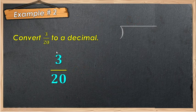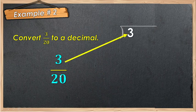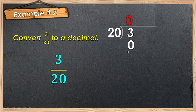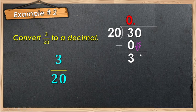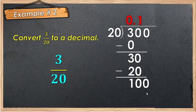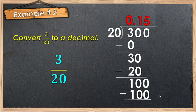Number 2: 3 over 20. Convert to decimal. 3 is inside the long division bar, 20 is outside. Proceed to division. 3 divided by 20, the answer is 0. Then 0 times 20 is 0. 3 minus 0 is 3. Then add 0 and place the decimal point. Bring down 0: 30 divided by 20, the answer is 1. 1 times 20 is 20. 30 minus 20 is 10. Add 0 and bring it down: 100 divided by 20. The answer is 5. 5 times 20 is 100. 100 minus 100 is 0. Therefore, the equivalent value of 3 over 20 is 0.15, or 15 hundredths.